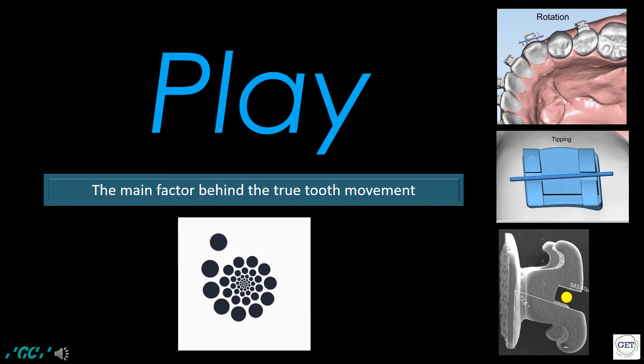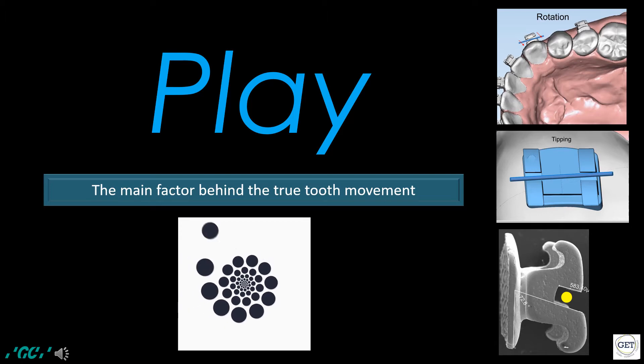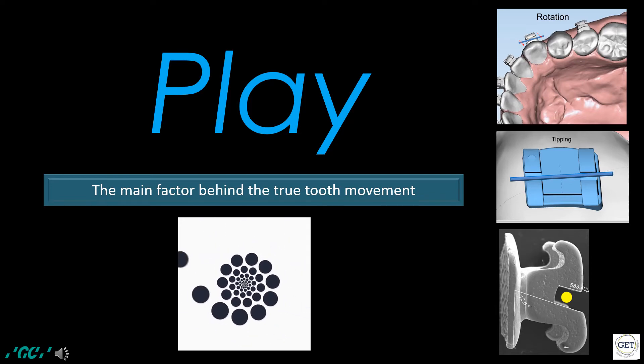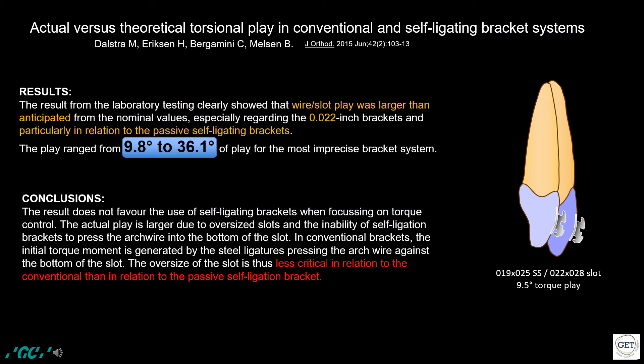Play is considered to be a major factor in controlling teeth movement, the expression of the system prescription, treatment time, and outcome. It manifests in uncontrolled or undesired tooth movements such as tipping, rotation, and torque loss. Good knowledge and special efforts are required from the doctor to overcome and control those side effects. Theoretically, the play of a 0.19 by 0.25 stainless steel wire in a 0.22 slot is estimated to be about 9.5 degrees, leading to an actual torque of only 7.5 degrees in the MBT prescription for the upper central incisors and 2.5 degrees for the Roth prescription.